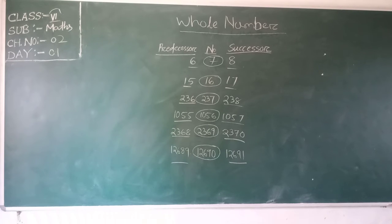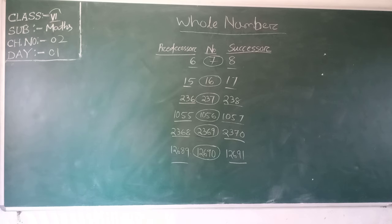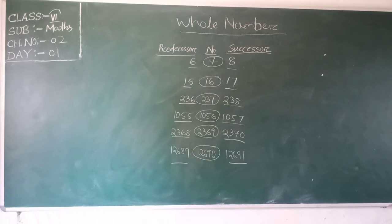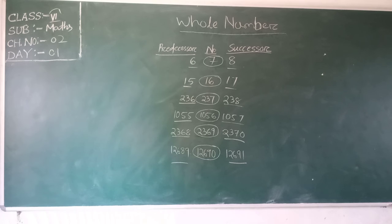Let us discuss some more examples of predecessor and successor together. The number 7: its predecessor is 6 and its successor is 8. The number 16: its predecessor is 15 and its successor is 17. The number 237: its predecessor is 236 and its successor is 238. The number 1056: its predecessor is 1055 and its successor is 1057. The number 2369: its predecessor is 2368 and its successor is 2370.